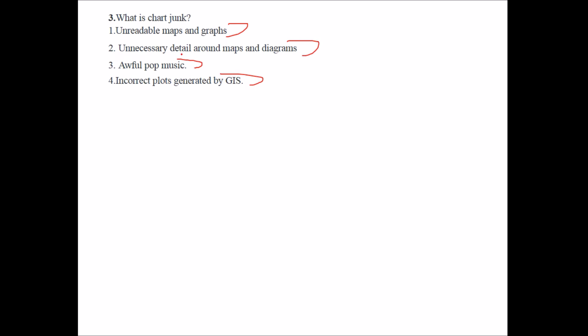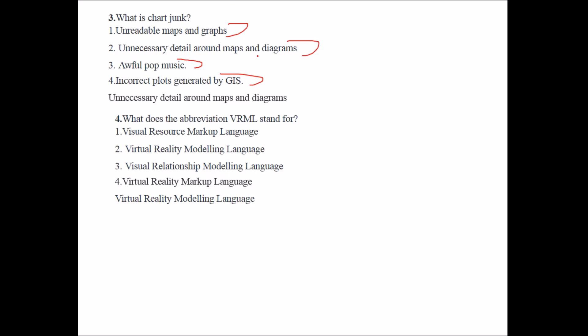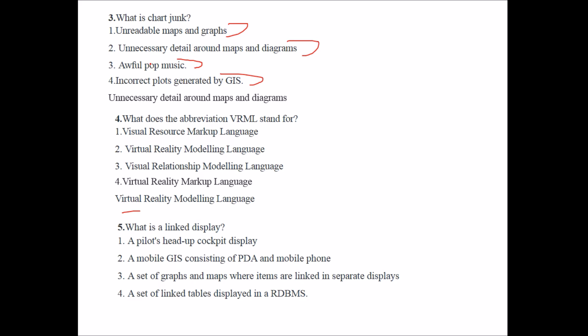What is chart junk? Options: unreadable maps and graphs; unnecessary detail around maps or diagrams; or incorrect plots generated by GIS. The answer is unnecessary detail around maps and diagrams. What does VRML stand for? It stands for Virtual Reality Modeling Language. What is linked display? A set of graphs and maps where items are linked in separate displays — that is the answer.